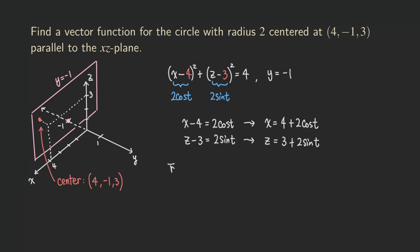So the vector function, r(t), it's going to be what? The x component would just be 4 + 2 cos t. So we put that here. What about the y? y is just going to be negative 1, because it's a constant. And then now, what is the z? z is just 3 + 2 sin t.